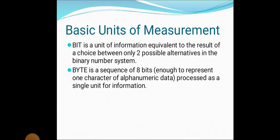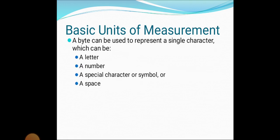The basic unit of measurement: bit. Bit is nothing but binary digit. It is a unit of information equivalent to the result of a choice between only two possible alternatives in the binary number system. A byte is a sequence of eight bits processed as a single unit of information. A byte can be used to represent a single character, which can be a letter, number, special character, or symbol.